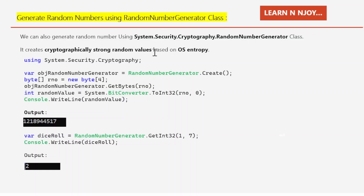Now let's learn how to generate random numbers using RandomNumberGenerator. We can use System.Security.Cryptography.RandomNumberGenerator, which creates cryptographically strong random values based on OS entropy. OS entropy is the combination of sound, mouse clicks, keyboard timings, and thermal temperature — making it much more secure.